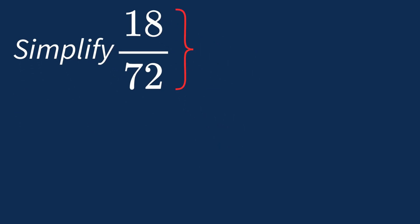To simplify 18 over 72, we need to look for the common factors between the top number, the numerator, and the bottom number, the denominator.